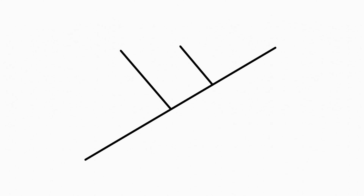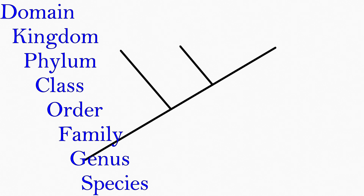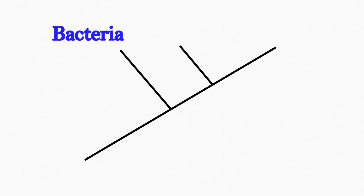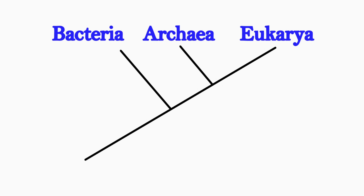We use figures known as cladograms to hypothesize relationships. This is a cladogram that represents life at the broadest taxonomic level, the domain. Three domains of life are currently recognized: bacteria, archaea, and eukarya.